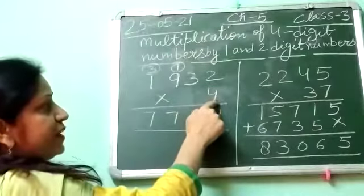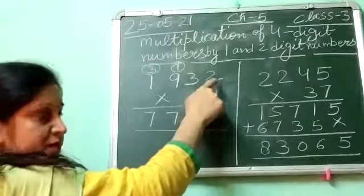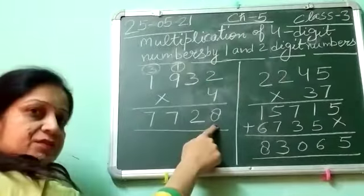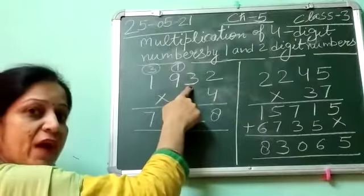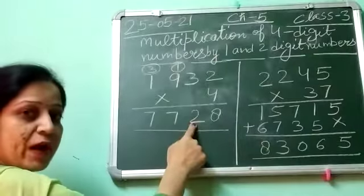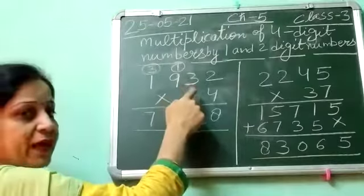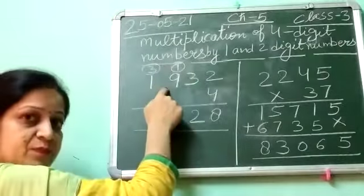Now first of all you will read the table of 4 and 2. Ones place: 4 times 2 is 8. Then tens place: 4 times 3 is 12. In 12, you have to write 2 here and 1 you have to put carry at hundreds place.